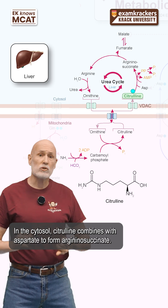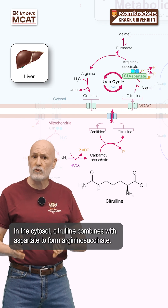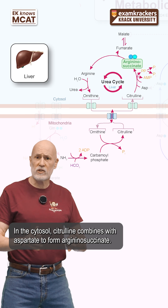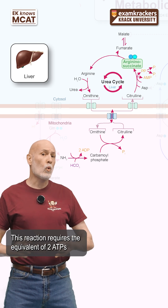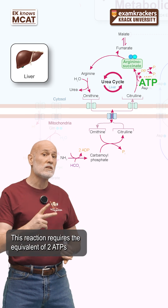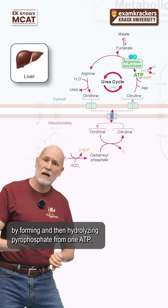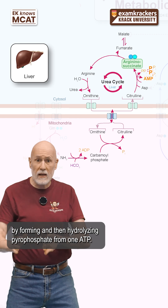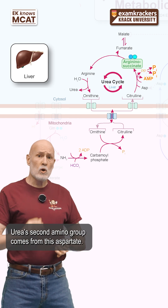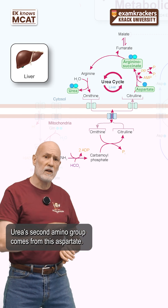In the cytosol, citrulline combines with aspartate to form argininosuccinate. This reaction requires the equivalent of two ATPs by forming and then hydrolyzing pyrophosphate from one ATP. Urea's second amino group comes from this aspartate.